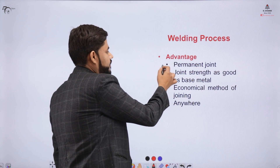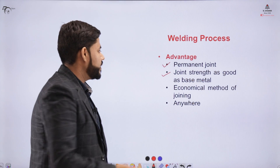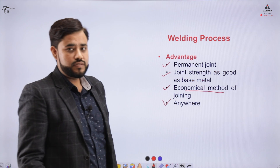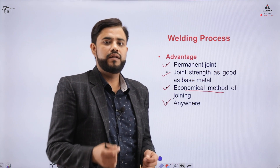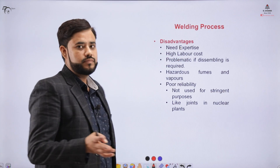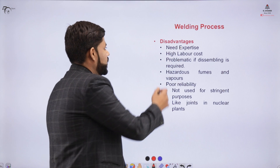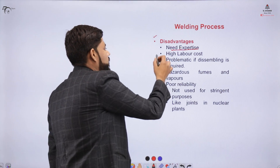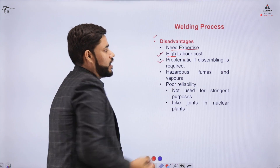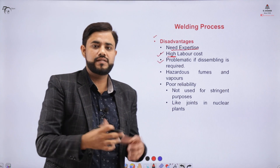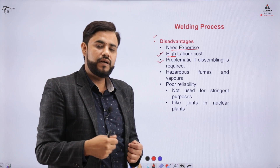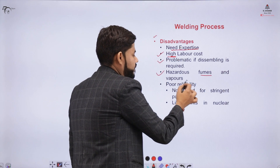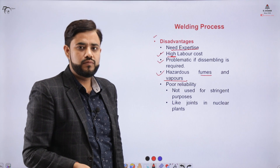Welding has certain advantages: the joint produced is a permanent joint with good strength compared to the base metal, welding is an economical method of joining, and we can perform welding anywhere by transporting the equipment to a location and joining the two components. Disadvantages include that it requires expertise and skilled professionals. Labor cost is high, and disassembling welded components is a complicated task.